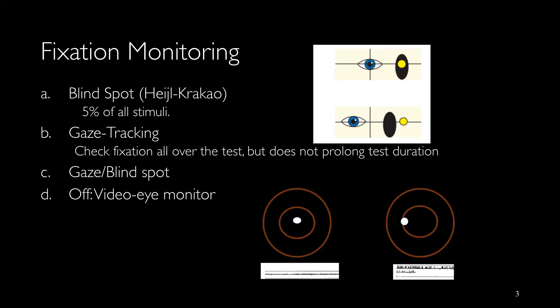For checking fixation we have four options. Blind spot: generally when we shine the light on the optic nerve head the patient should not be able to see, and if the patient sees the light it means the patient has moved the eye and the light has been shined on the retinal ends of the optic nerve head. It will be reported as fixation loss.